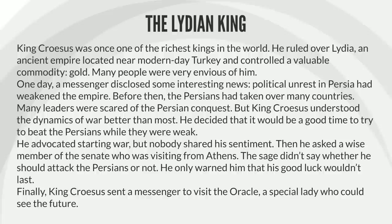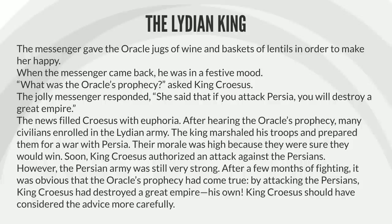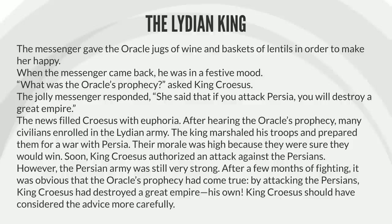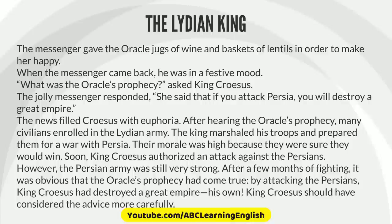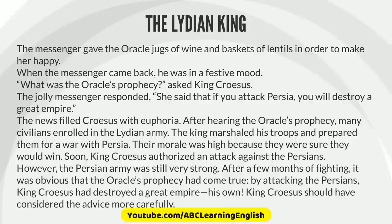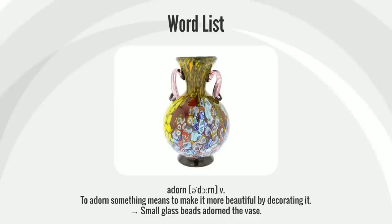Then he asked a wise member of the senate who was visiting from Athens. The sage didn't say whether he should attack the Persians or not. He only warned him that his good luck wouldn't last. Finally, King Croesus sent a messenger to visit the oracle, a special lady who could see the future. The messenger gave the oracle jugs of wine and baskets of lentils in order to make her happy. When the messenger came back, he was in a festive mood. 'What was the oracle's prophecy?' asked King Croesus. The jolly messenger responded, 'She said that if you attack Persia, you will destroy a great empire.' The news filled Croesus with euphoria. After hearing the oracle's prophecy, many civilians enrolled in the Lydian army. The king marshaled his troops and prepared them for a war with Persia. Their morale was high because they were sure they would win. Soon, King Croesus authorized an attack against the Persians. However, the Persian army was still very strong. After a few months of fighting, it was obvious that the oracle's prophecy had come true. By attacking the Persians, King Croesus had destroyed a great empire — his own. King Croesus should have considered the advice more carefully.